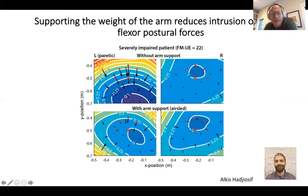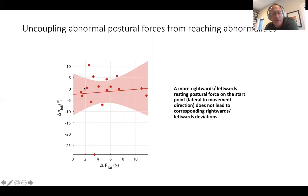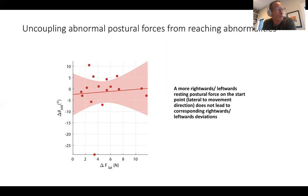Interestingly, these resting abnormalities do not appear to correlate with what happens during voluntary movements. The resting postural force on the y-axis versus what happens during movement on the x-axis shows they don't correlate. This is important because if you were to try and treat the abnormal postural abnormality at rest, that doesn't mean you necessarily make them better during voluntary movement — analogously to Parkinson's disease, where you can fix the resting tremor but that doesn't make the abnormalities during movement any better.